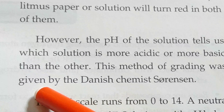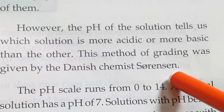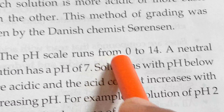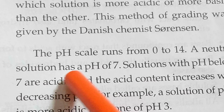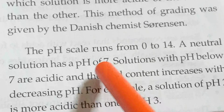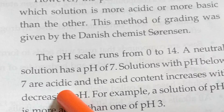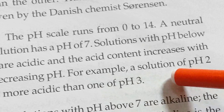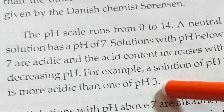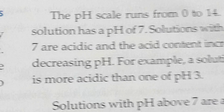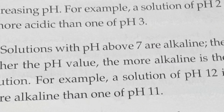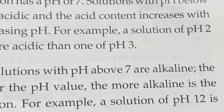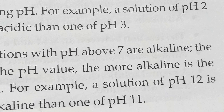This method of grading was given by the Danish chemist Sorensen. The pH scale runs from 0 to 14. A neutral solution has a pH of 7. A solution with pH below 7 is acidic, and the lower the pH, the more acidic the solution. Above 7 is alkaline in nature. The higher the pH value, the more alkaline is the solution. For example, a solution of pH 12 is more alkaline than one of pH 11.